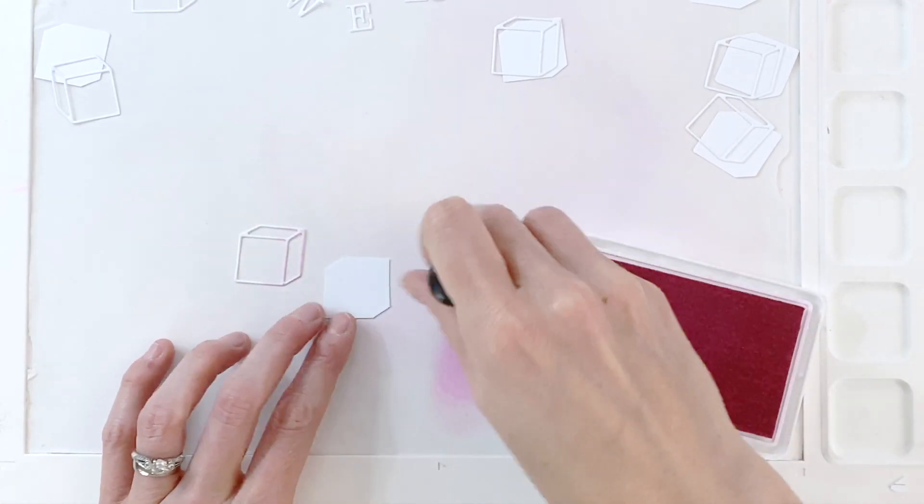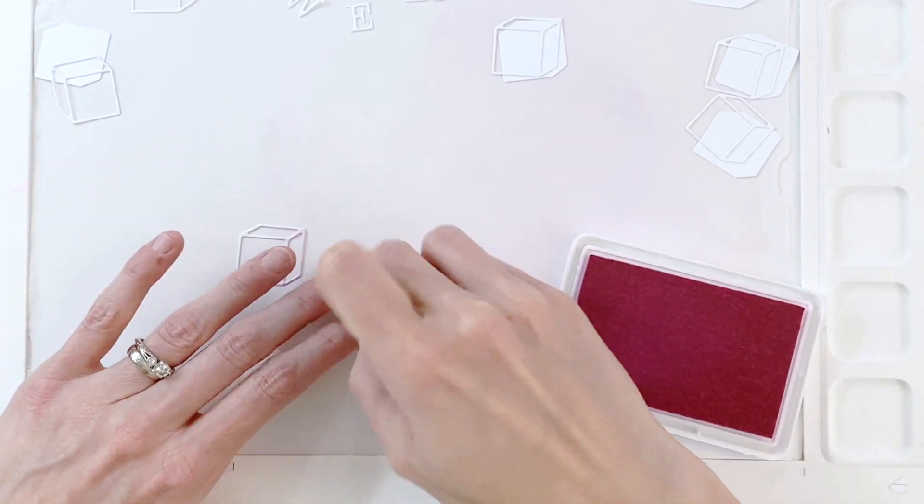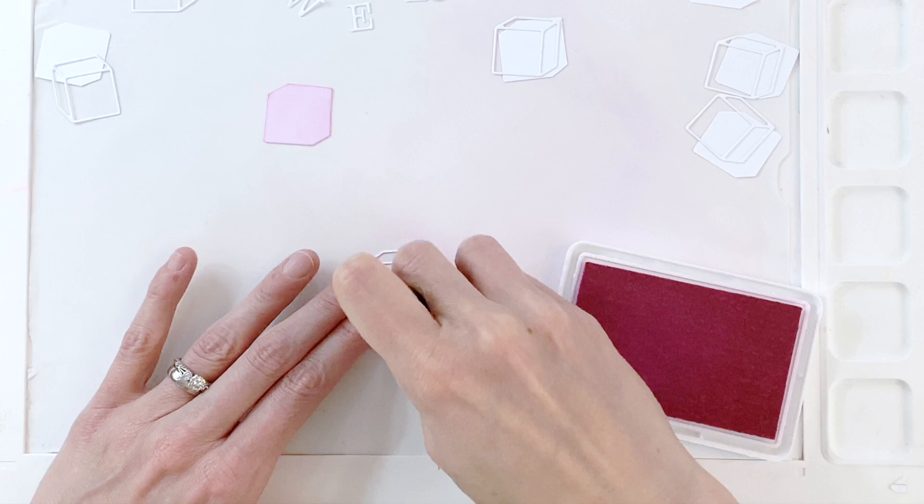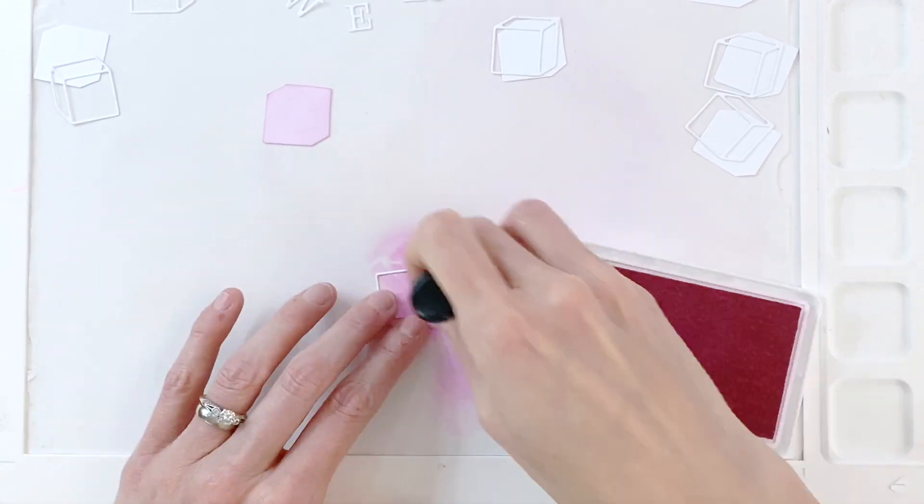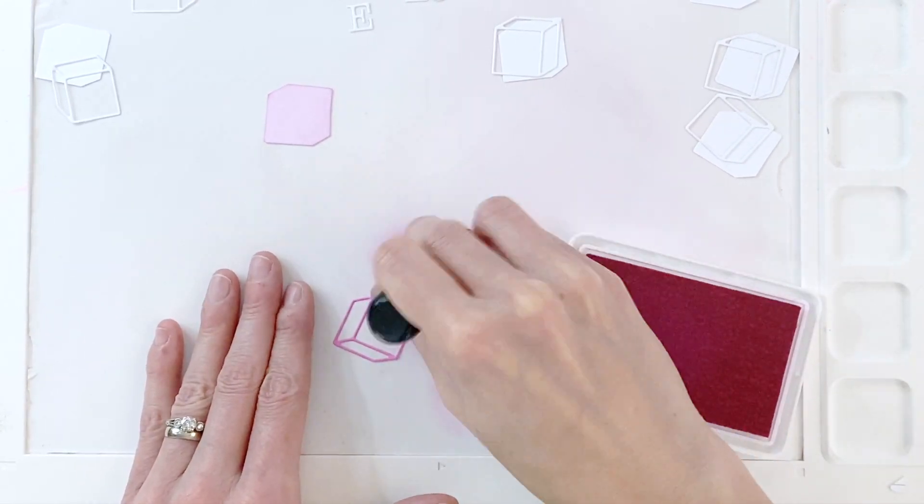I'm going to use some Pinkfresh inks today. I'm going to start with the base or the background for the block and ink that very lightly. I'm using Sparkling Rose here which is a nice pink. Then I'm going to use that same ink and be more heavy handed to ink blend the letter and the outline.